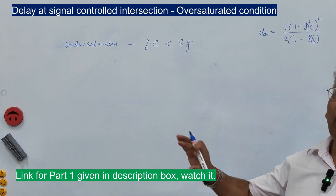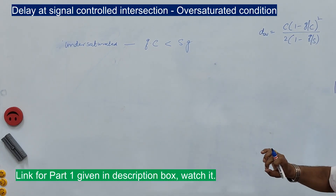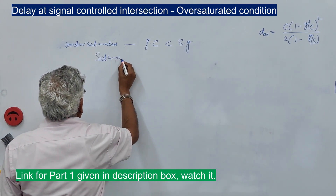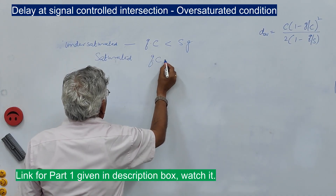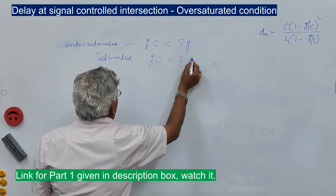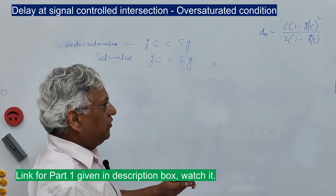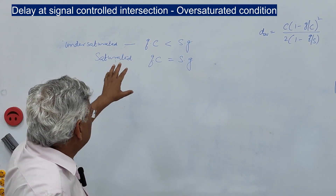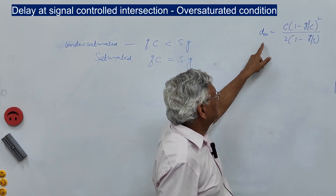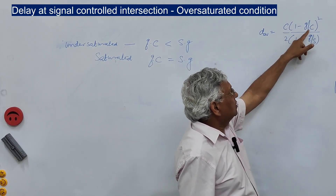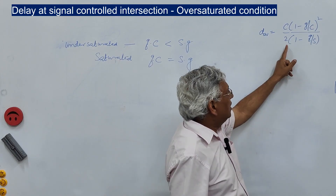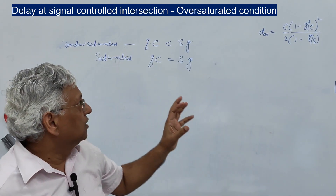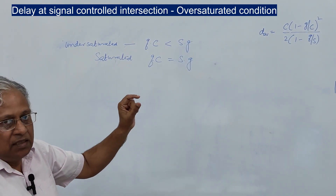Q is considered to be a uniform rate of arrival. In the case of a saturated cycle, when the rate of arrival equals the rate of departure, Q×C = S×G. The average delay to an individual vehicle under these two cases is given by the equation: D = C(1 - g/C)² / [2(1 - Q/S)], where Q/S is called the flow ratio.